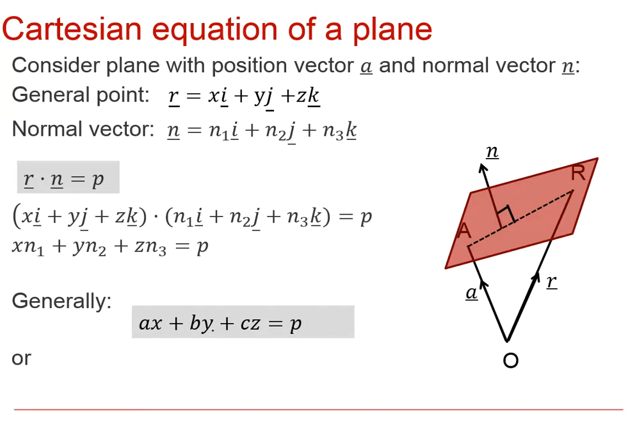Generally we write it as ax plus by plus cz equals p, as you can see very similar to this where a, b, and c are the components of the normal vector, or we write it like n₁x plus n₂y plus n₃z plus d equals zero. This is the way it will come up in your formula booklet.